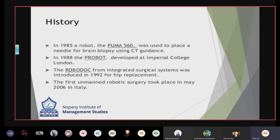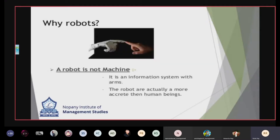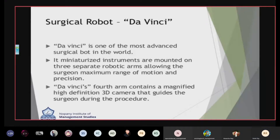Why use robots? Because a robot is not just a machine — it gives information through its arm and is more accurate than a human being. The most advanced surgical robot in the world is the da Vinci system. It is mounted on three separate robotic arms, which allow the surgeon to perform a maximum range of motion. Its fourth arm contains a 3D camera that guides the surgeon during the procedure.